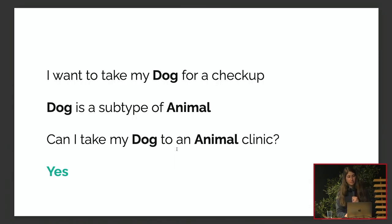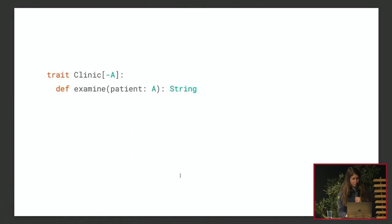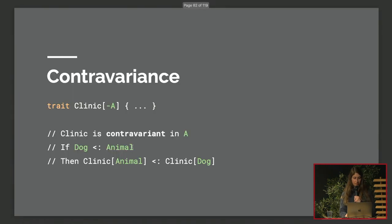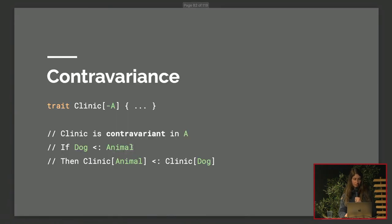To use an instance of Clinic[Animal] where I need Clinic[Dog], I need to make Clinic[Animal] a subtype of Clinic[Dog]. This is why it's called contravariance — we've propagated the link of parenthood between Dog and Animal, but swapped it. Adding the little minus sign in front of the A type parameter makes Clinic contravariant in A, inverting that relationship. With this change, the code compiles.